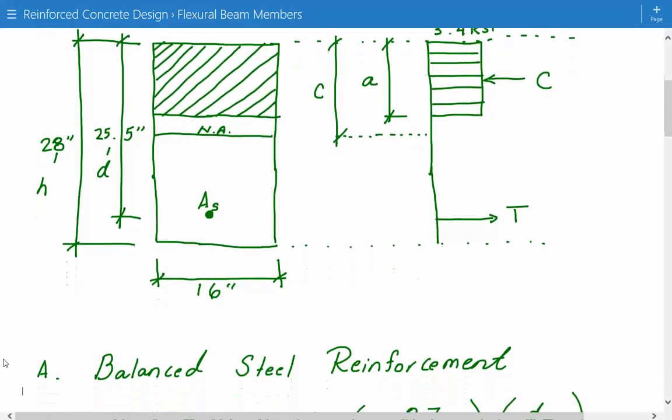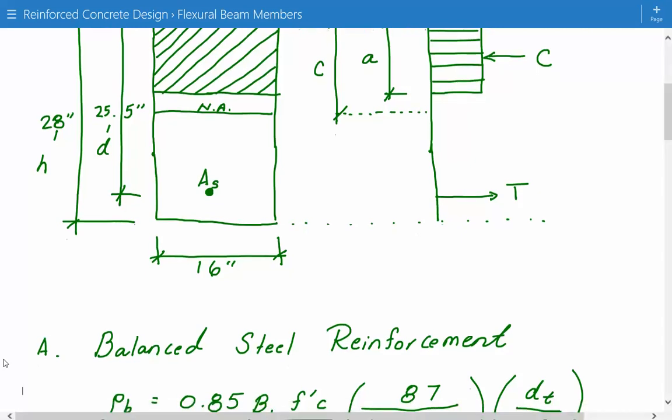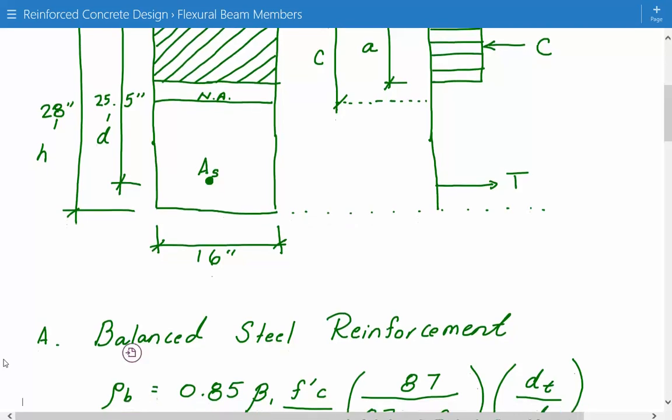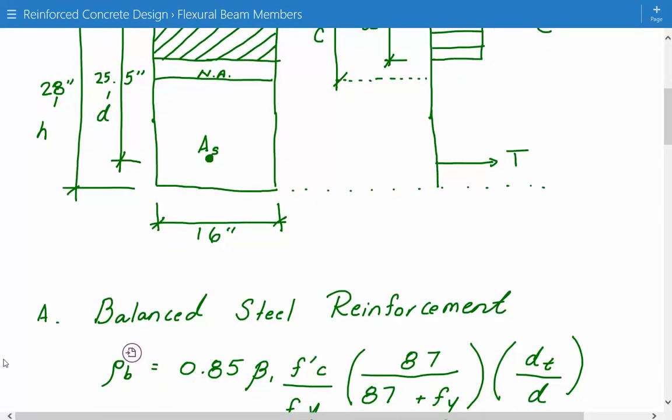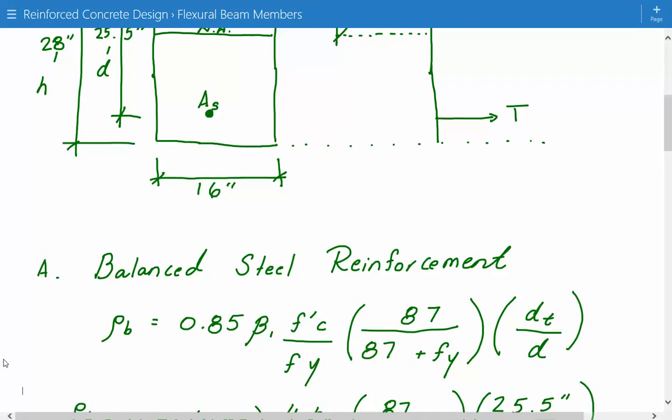To do that, we need to calculate the steel reinforcement ratio. Once we have the ratio, we can multiply it by the effective cross-section to get the area of steel. This is the equation for the ratio of steel: ρb equals 0.85 times beta 1 times f'c divided by fy times 87 divided by 87 plus fy times dt over d.